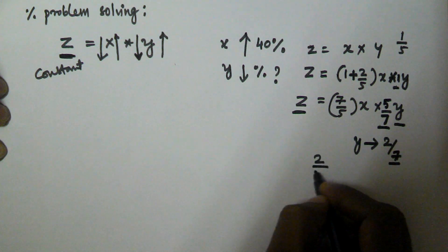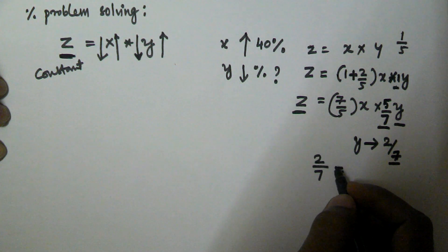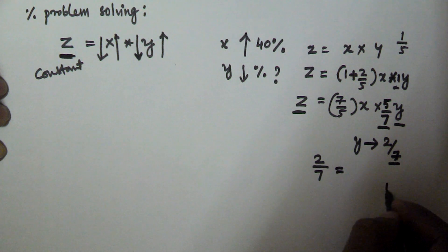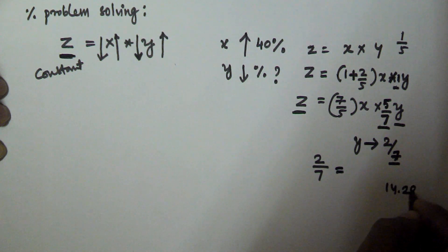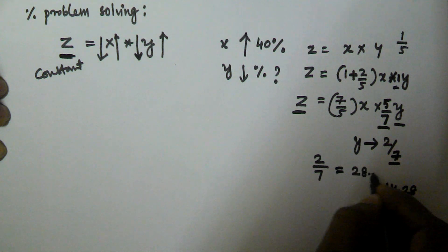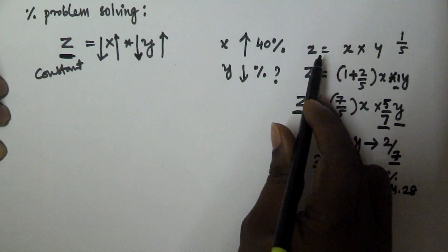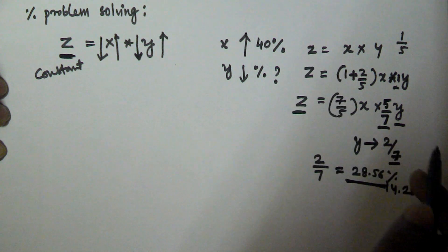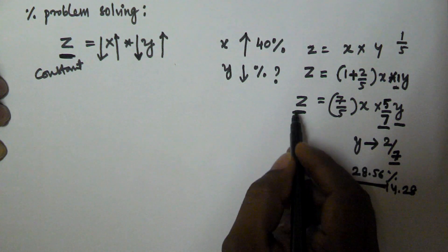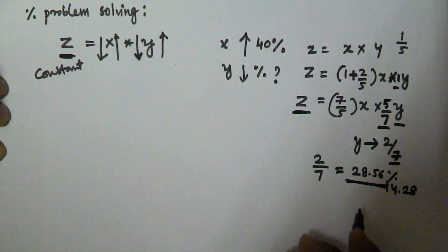Initially y was 1, but now it is 5/7, so y is reduced by 2/7. Since 1/7 equals 14.28 percent, 2/7 equals 28.56 percent. So if x is increased by 40 percent, y must be reduced by 28.56 percent so that z remains constant.